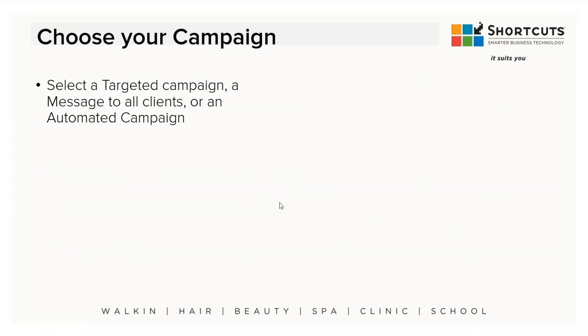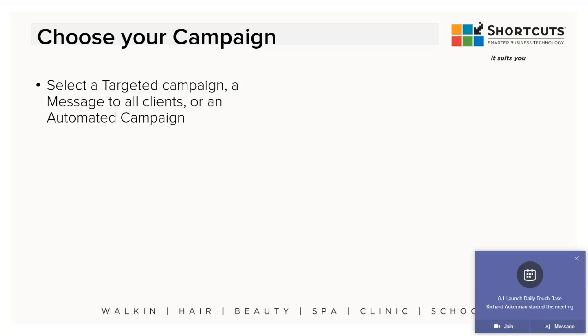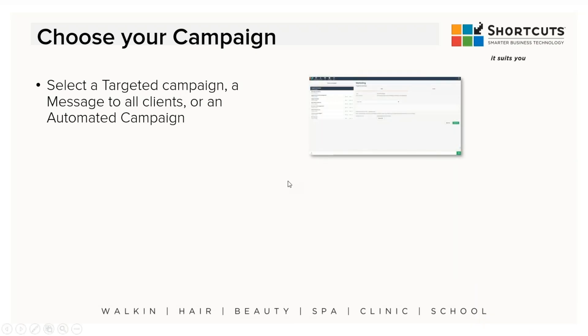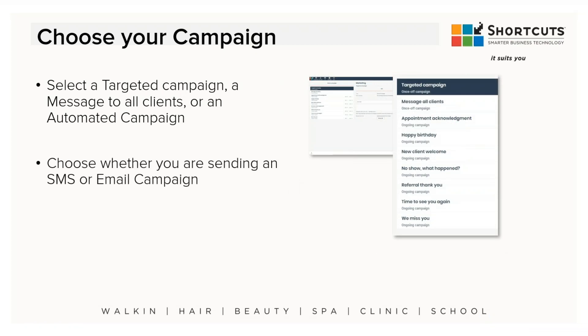From the Marketing page you choose your campaign. There are several types of email or SMS campaigns you can send to customers: a targeted campaign, a message to all clients, or one of several automated campaigns. From the marketing page on the left side you'll see these options. Once you select what type of campaign you're sending — whether it's targeted to a specific group, message all customers, or automated ones like Happy Birthday or We Miss You — you proceed to set it up.